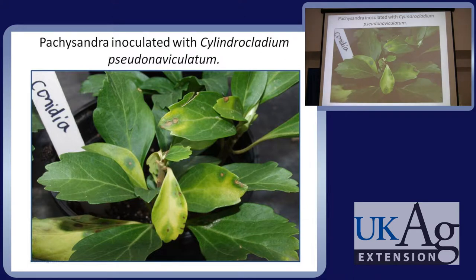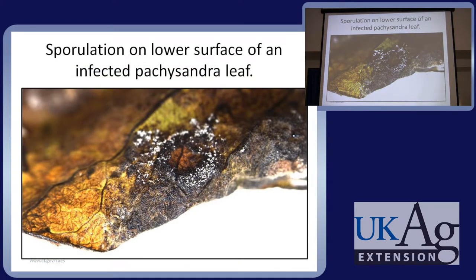At the Connecticut Agricultural Research Station, inoculation trials on Pachysandra — which is in the boxwood family — found that it could be infected under fairly high inoculum levels. This has never been observed in a natural nursery situation, only under lab conditions with high inoculum exposure, but it can act as a host. This is an image of infected Pachysandra showing sporulation of the boxwood blight pathogen.